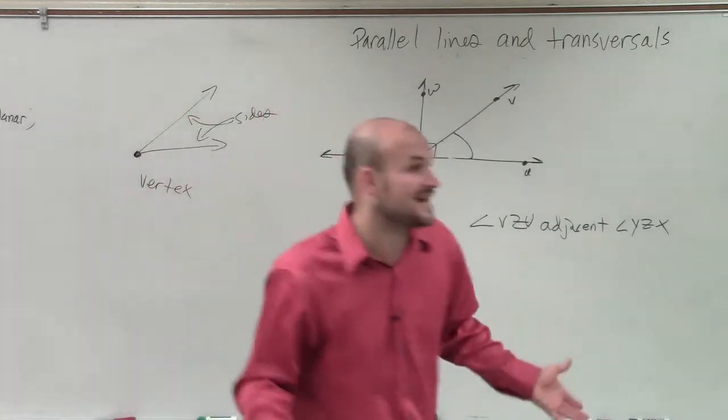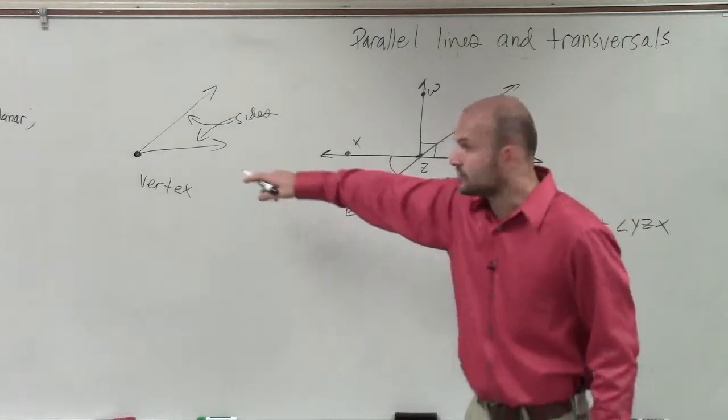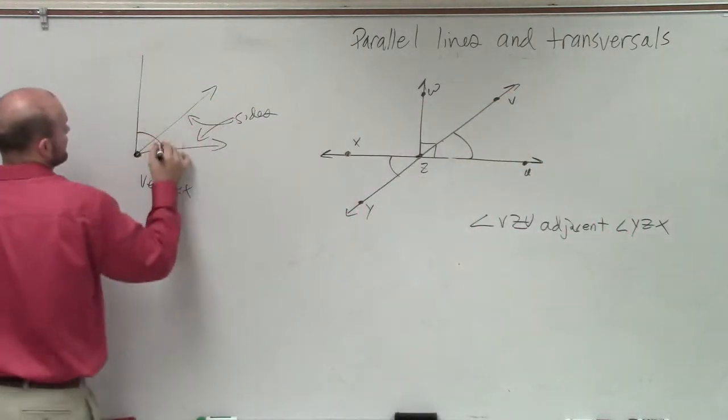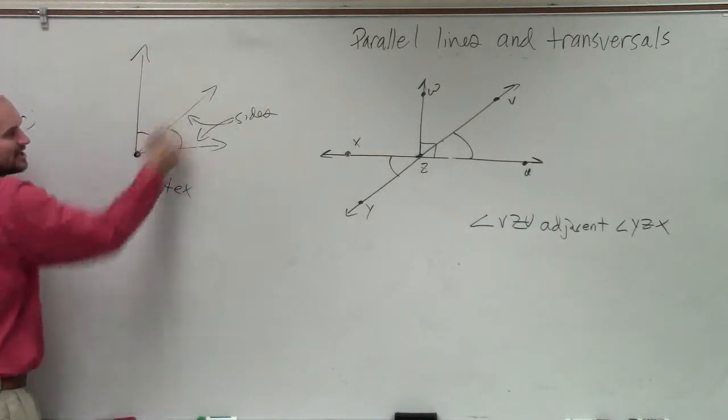So adjacent angles, all that tells you is two angles that share a vertex and share a side. For instance, those two angles are adjacent. They share a vertex and they share a side.